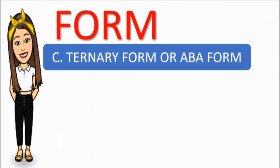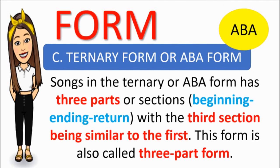Next is ternary form or A-B-A form. Songs in the ternary or A-B-A form have three parts or sections: beginning, ending, return — with the third section being similar to the first. This form is also called three-part form. Commonly, songs in ternary form have one main idea — that is A — one contrasting idea — that is B — and a repetition of the main idea — that is A. Ang Pasko ay sumapit is an example of ternary form or A-B-A form.